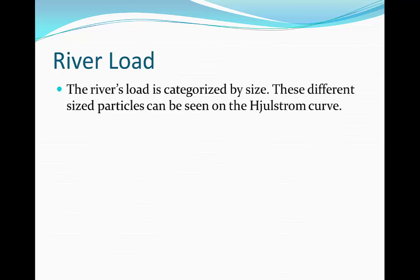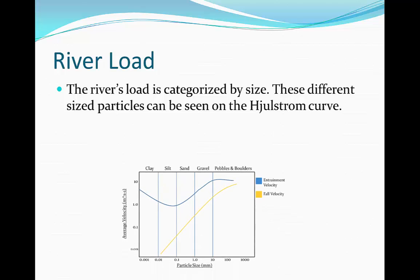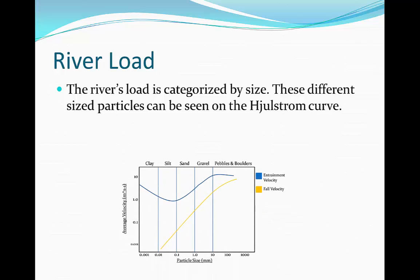A river's load is categorised by size. These different sized particles can be seen on the Hallstrom Curve. If you would like to check out the video of the Hallstrom Curve, click on the curve now where there will be an annotation which will take you to the video. On the bottom we have the particle size in millimetres. As you can see, these correlate up on the top of the graph to different types of load, so these different types of load will be of different sizes.